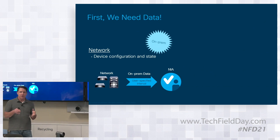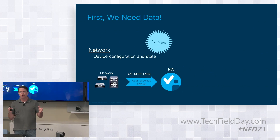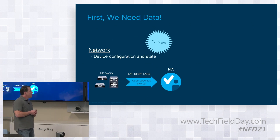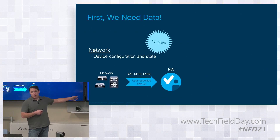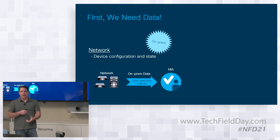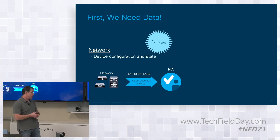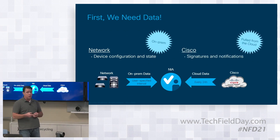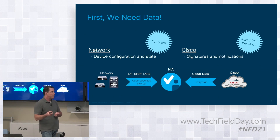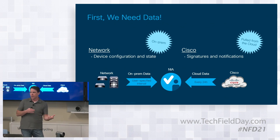There's also a focus on actionable recommendations — not only identifying a problem with something you have deployed, but also how to go about remediating or resolving that issue. In terms of mechanics, there are two components. First is the on-prem portion: NIA, as we call it, runs on top of DCNM. It's an on-premises solution today — there's no pure cloud version — though we are entertaining that as a possibility.